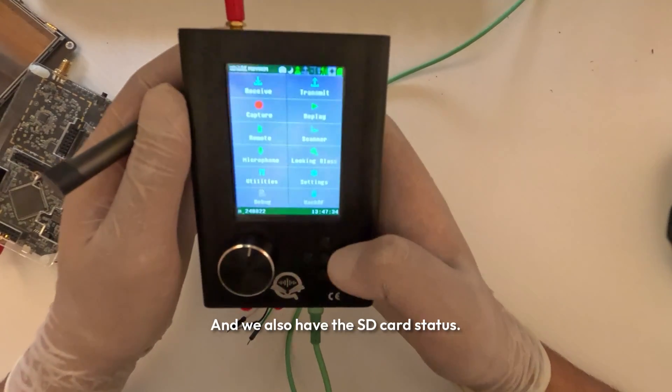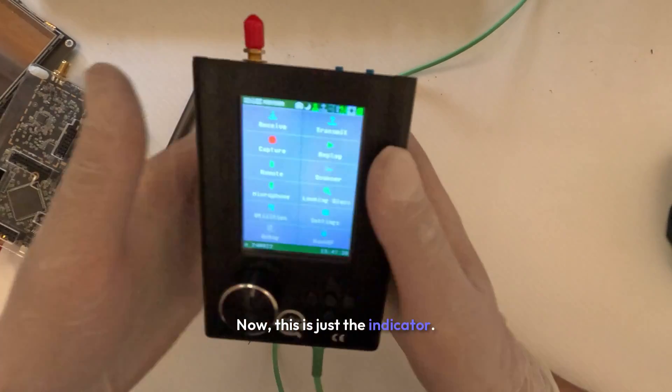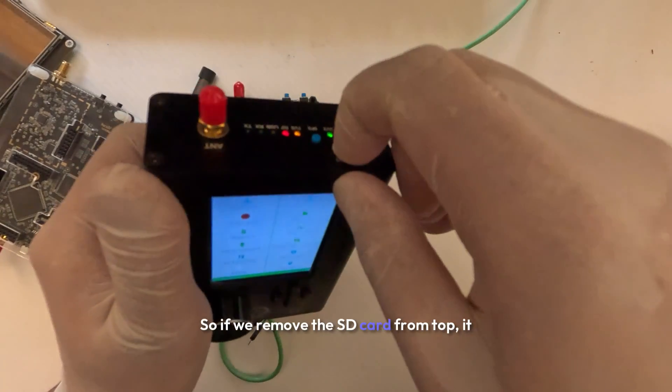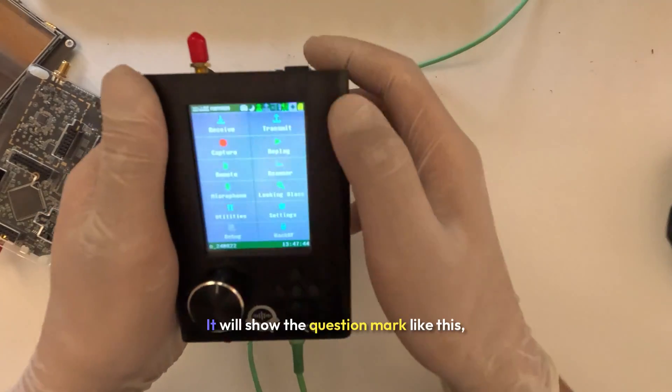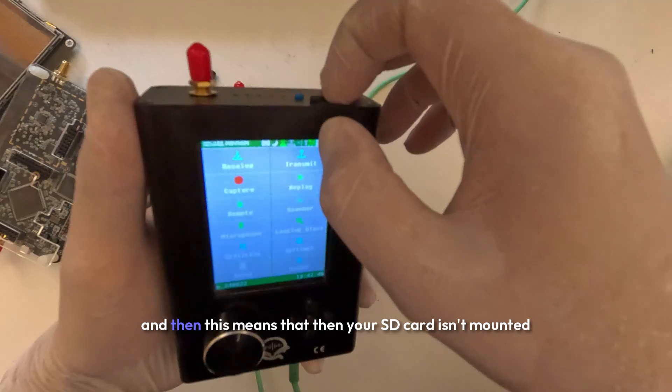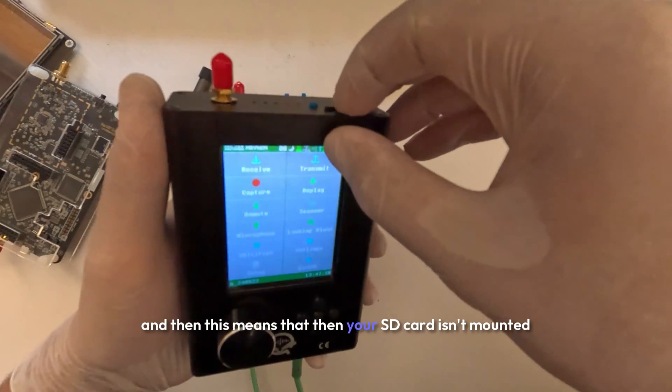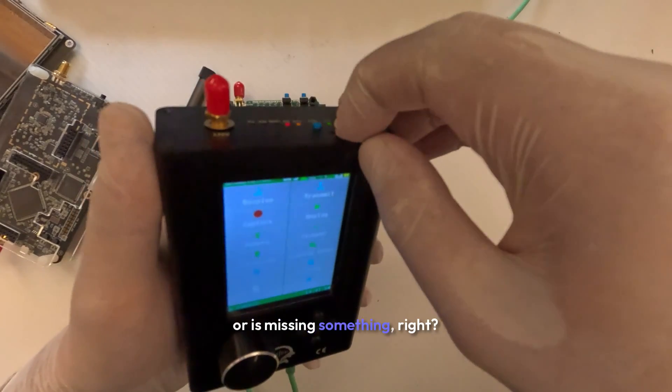And we also have the SD card status. This is not clickable, it's just an indicator. So if we remove the SD card from top, it will show the question mark like this. And then this means that your SD card isn't mounted or it's missing something, right?